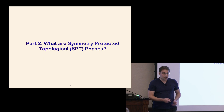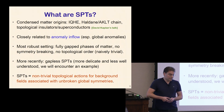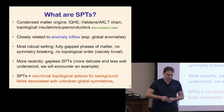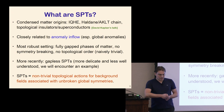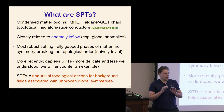Let me briefly review what symmetry-protected topological phases are. The big picture comes from condensed matter, where many examples were discussed: the quantum Hall effect, topological insulators and superconductors, and the Haldane chain — these are all in this class. They're very closely related to anomaly inflow. The most robust setting in which these have been studied is in fully-gapped phases of matter without any symmetry breaking or topological order — phases you would normally characterize as boring, trivial, and featureless, unless you know to ask the right questions.